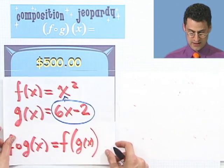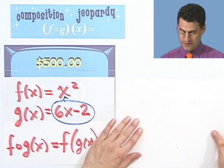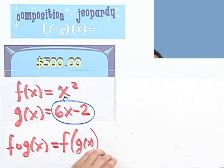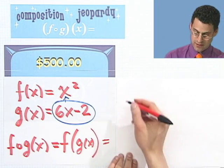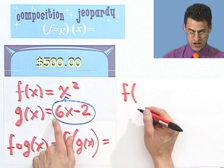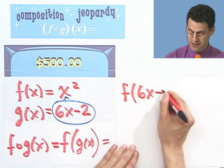Let's just see that in a teeny bit more detail. What I would see is the following. I would see this equals f of, and then g is 6x minus 2.